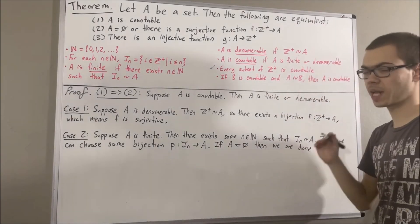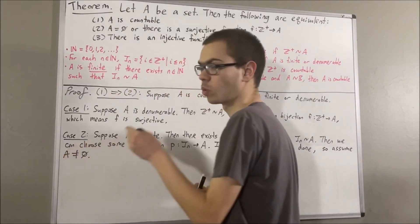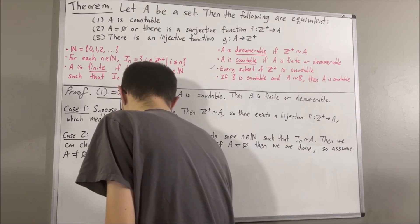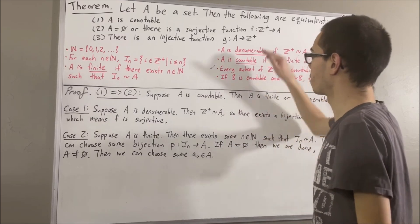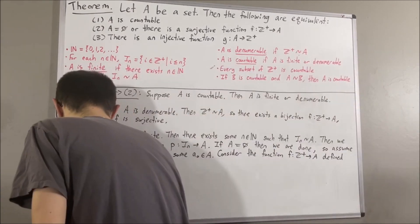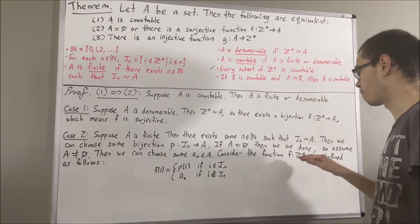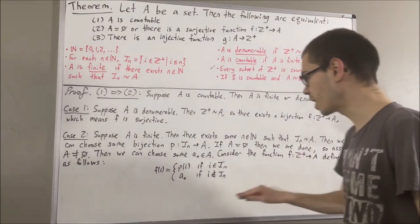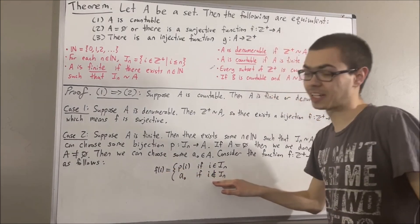Now let's consider the case where A is not the empty set. Since A is not empty, A has at least one element in it, so we can choose some element in A — I'll call it A₀. We're going to define a function f from the positive integers to A as follows: given that i is a positive integer, we set f(i) equal to P(i) if i is an element of Iₙ, and f(i) equal to A₀ if i is not an element of Iₙ.